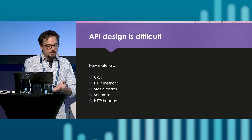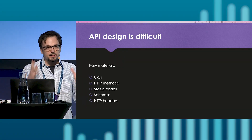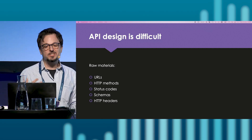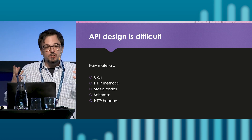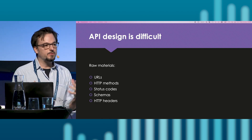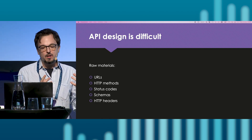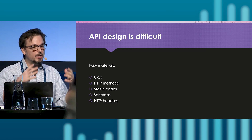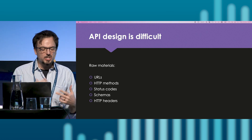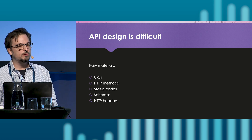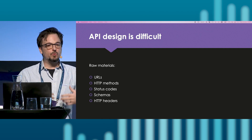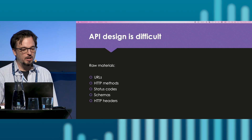API design is very difficult. We can agree that design-first is the way to go, but then we sit at the table and it's incredibly difficult. Part of it is because we are designing user experiences — that's a very difficult job. But also, the raw materials we have to build and design APIs are not easy to work with most of the time. If we think about REST, we have raw materials like URLs, HTTP methods, status codes, query and path parameters, and we have to figure out how to put these things together to represent a user flow or a process.